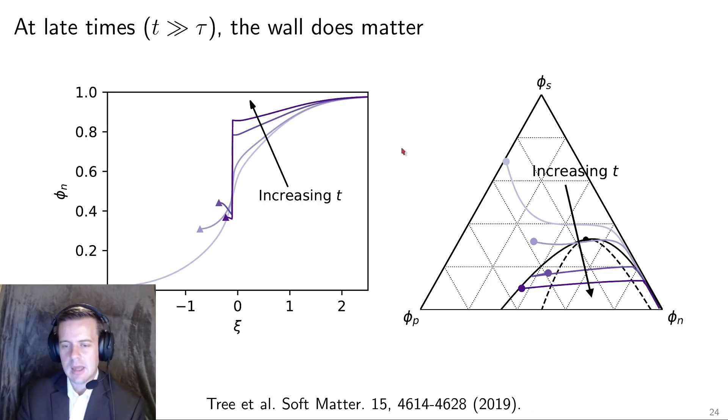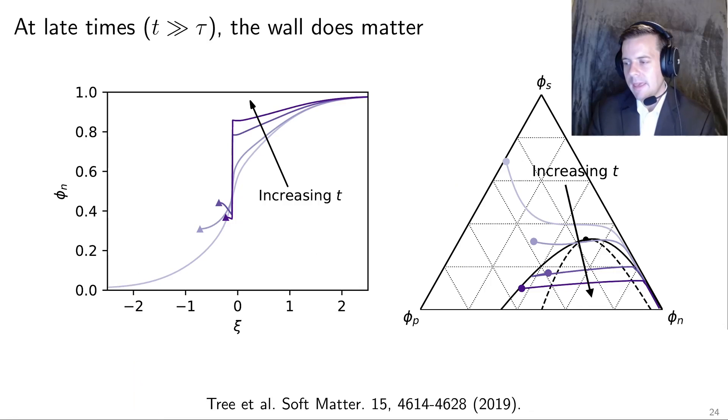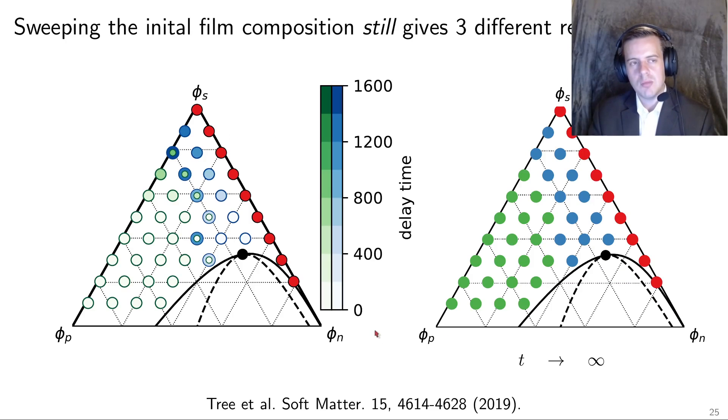What's interesting then is that at later times, the wall does matter. You can see that as time goes on, the film concentration then begins to move and it can now move into the two phase window. Initially it stays here, but then over time it changes and you get a phase separation. We can sweep the initial film concentration. There's some kind of interesting transients that I don't really have time to talk about. But as time goes to infinity, we still end up with three different regimes of behavior. Red means I get no phase separation, blue gives me a spinal decomposition and green means I just phase separate between a bulk term, but no microstructure develops in either phase.